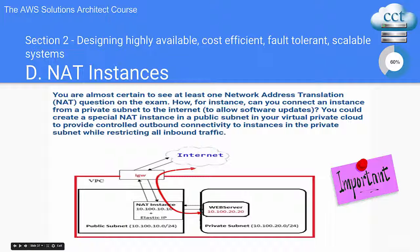You are almost certain to see at least one network address translation question on the exam — something like: how can you connect an instance from a private subnet to the internet? For example, you have a private subnet and you don't really want anyone accessing it, you're just using it within your organization. However, it suddenly dawns on you that you need software updates, and the easiest way is to get a connection to the internet. You could create a special NAT instance in a public subnet in your VPC to provide controlled outbound connectivity to instances in the private subnet while restricting all inbound traffic.